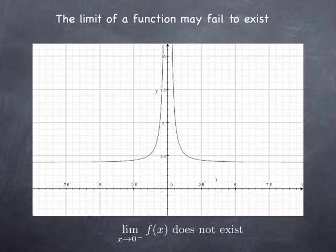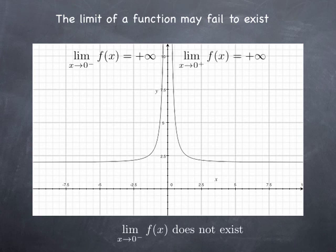However, we may try to say something about the way it fails to exist, because the behavior here is quite different from the behavior when there is a one-sided limit. In that case, we are going to write that the limit as x is approaching 0 from the left of f of x is positive infinity, to indicate that the values of f of x keep growing as x gets closer to 0 and x is less than 0. Since we have the same behavior from the right when x is greater than 0, we are going to say that the limit from the right of f of x is also positive infinity, again to indicate how the limit fails to exist — specifically because the values of the function grow without bounds.